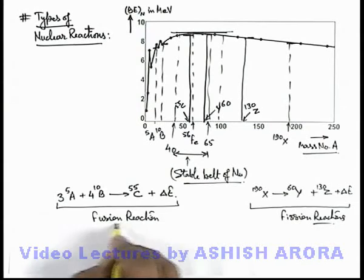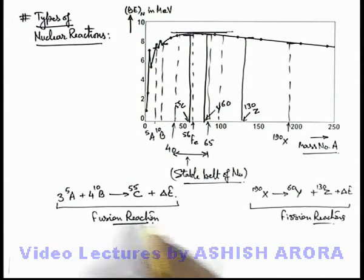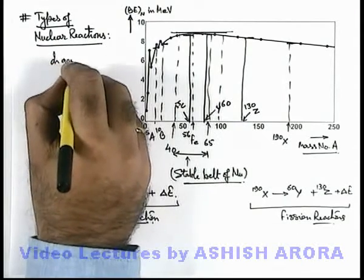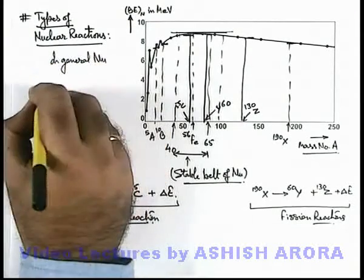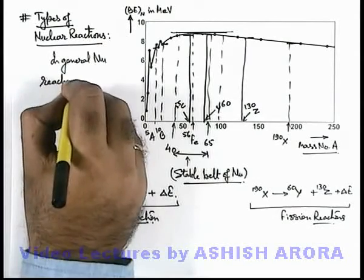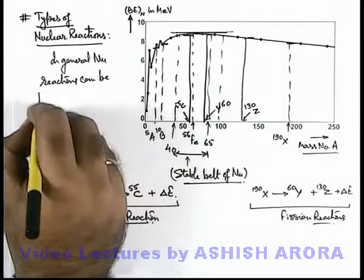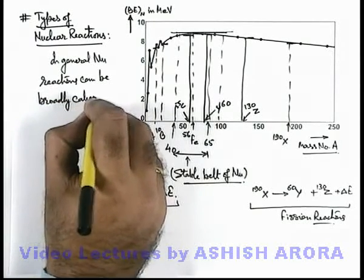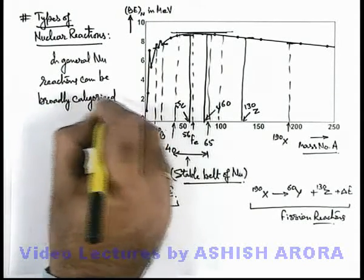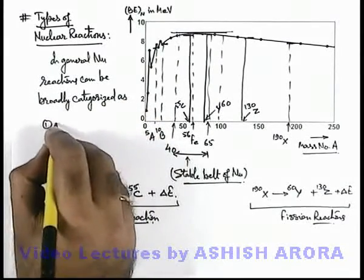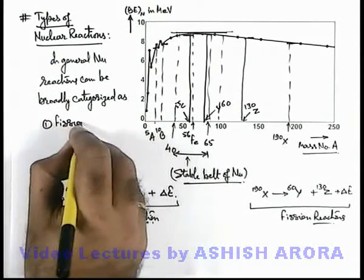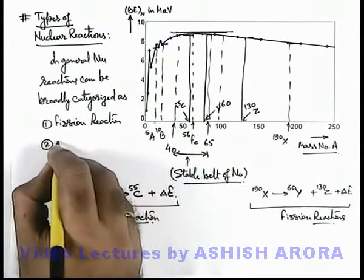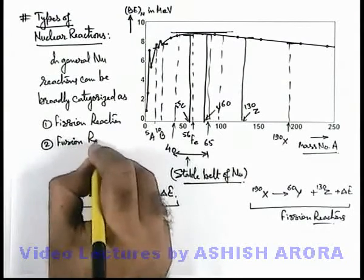So here in all we can say these are two broad categories of nuclear reactions we can write. In general, nuclear reactions can be broadly categorized in two categories, basically the first one as fission reaction or it is also termed as nuclear fission, and the other is fusion reaction or nuclear fusion.